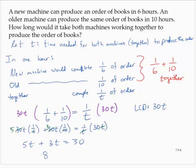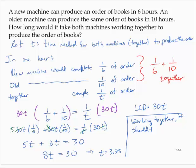5T plus 3T, that's 8T. 8T equals 30, and 30 divided by 8 is 3.75. So working together, it should take 3.75 hours to produce the order.